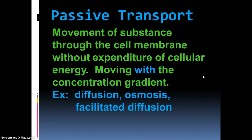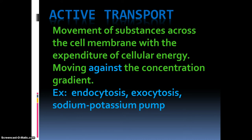Today we're going to jump into active transport. Active transport is when we go against the concentration gradient — from an area of lower concentration to an area of higher concentration. If you try to climb up a slide, it's a lot more difficult and requires energy. So when you go from low to high, that requires an input of cellular energy — ATP is going to be needed. Today we'll look at endocytosis, exocytosis, and the sodium-potassium pump.